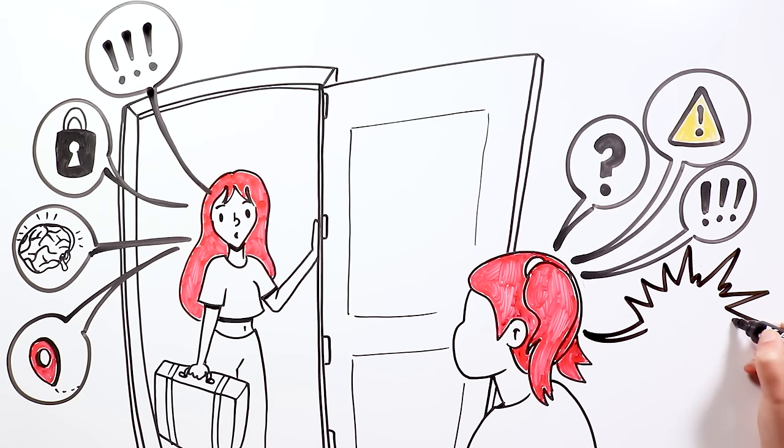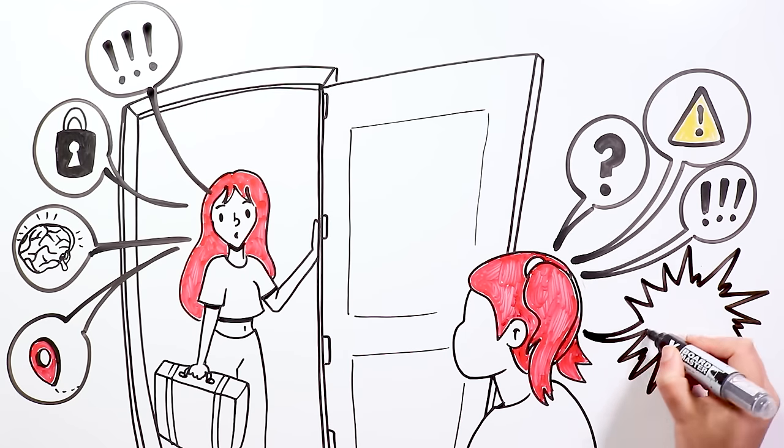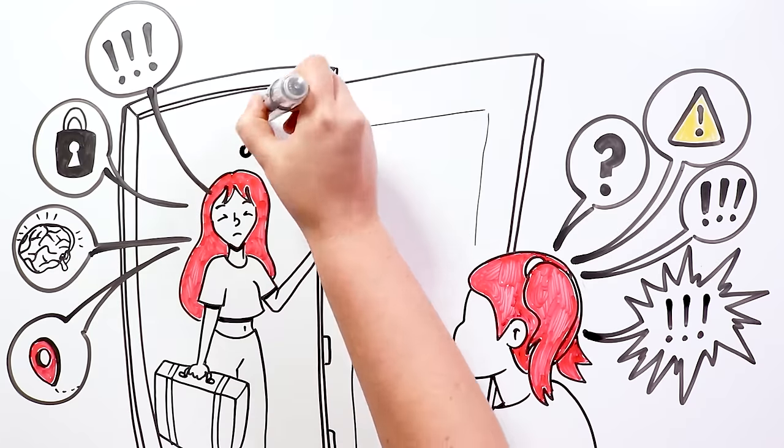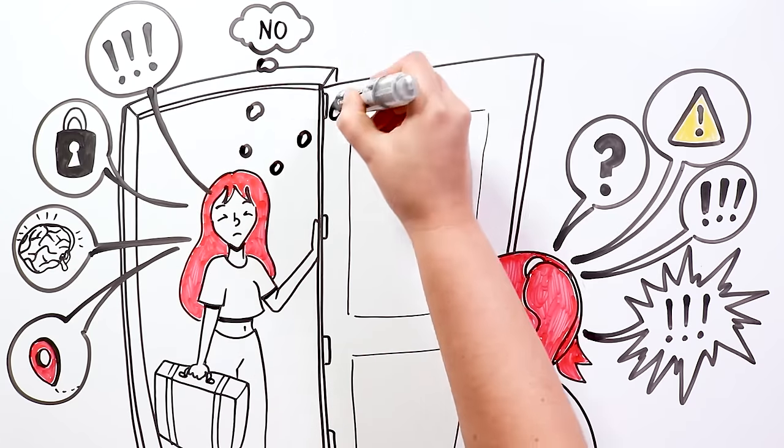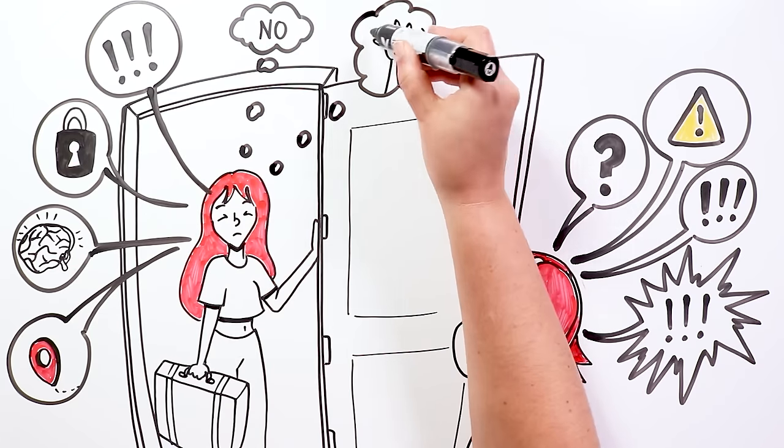But her sister didn't want to leave, nor did she want her to leave her alone, so she began to scream, alerting her mother. Mary had no choice but to leave her there and run before the woman stopped her.